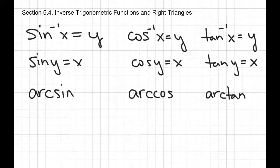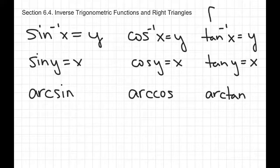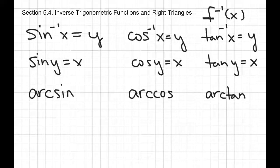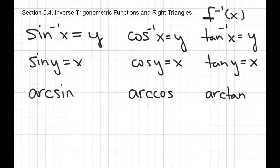There are two different notations for inverse. One has to do with the little negative 1 symbol — for example, f inverse of x, even though it looks like f to the negative first power. Same thing with sine with the little negative 1: that says inverse sine. The inverse functions are also sometimes called arcsine, arccosine, and arctangent. We kind of interchange them, but we're pretty much going to stick with the notation that has the negative 1.